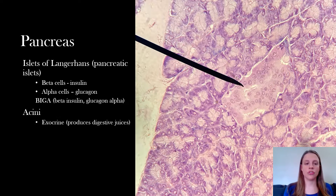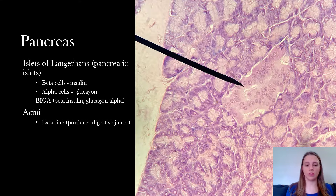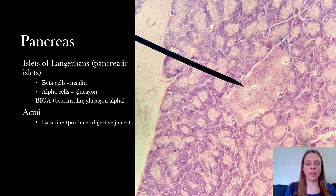There's also the acini, which are actually not endocrine tissue — they are exocrine tissue. The acini are all of these purple circles you can see on the slide.